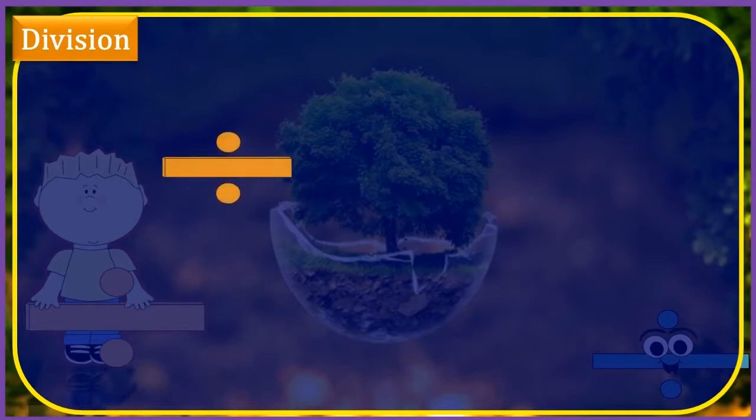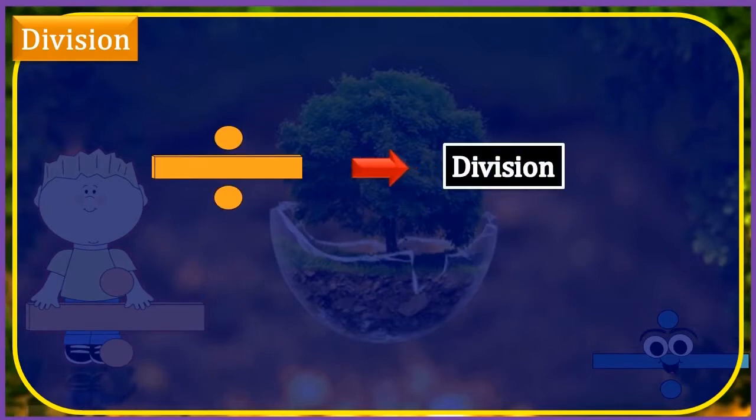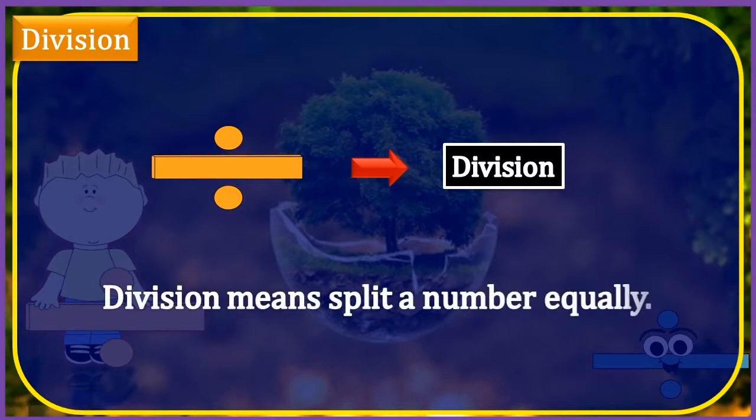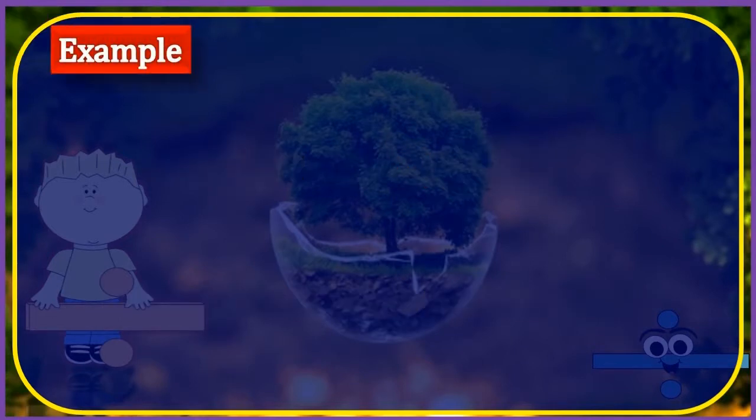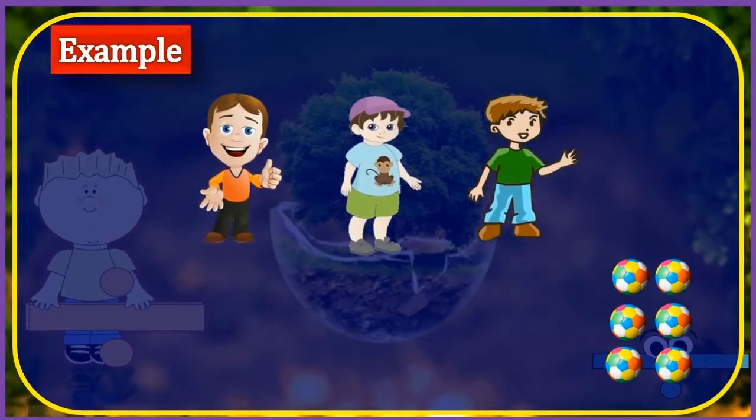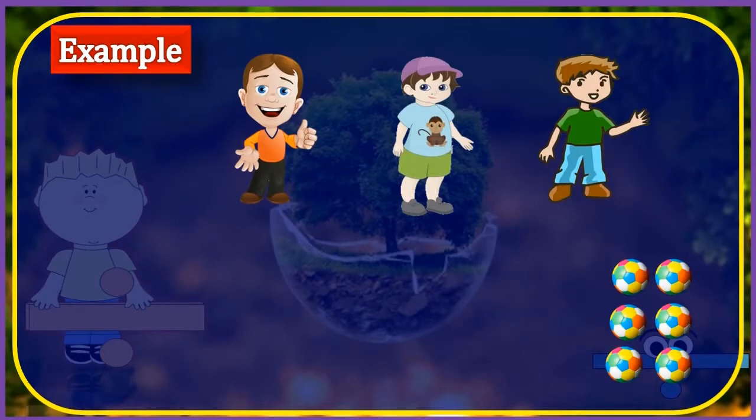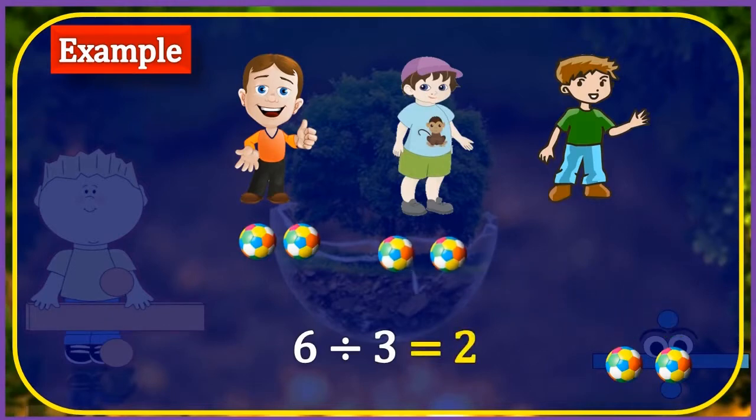By using the division sign, we divide a number by another number. In general, division means split a number equally. For example, divide 6 balls among 3 boys. We can write it like this and get the result as 2. It means each boy will get 2 balls.